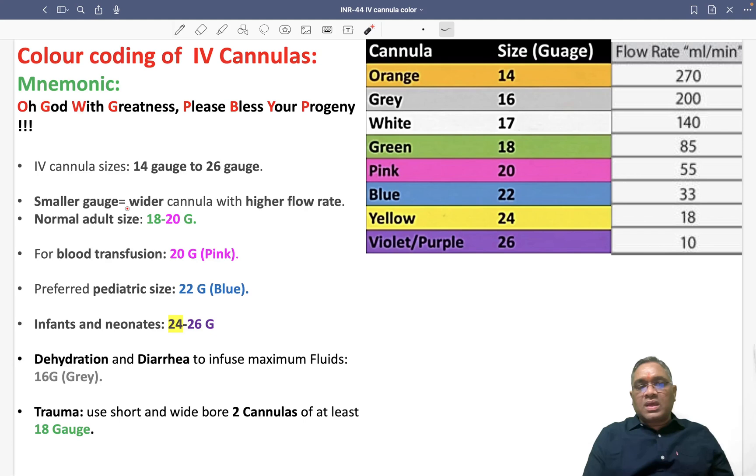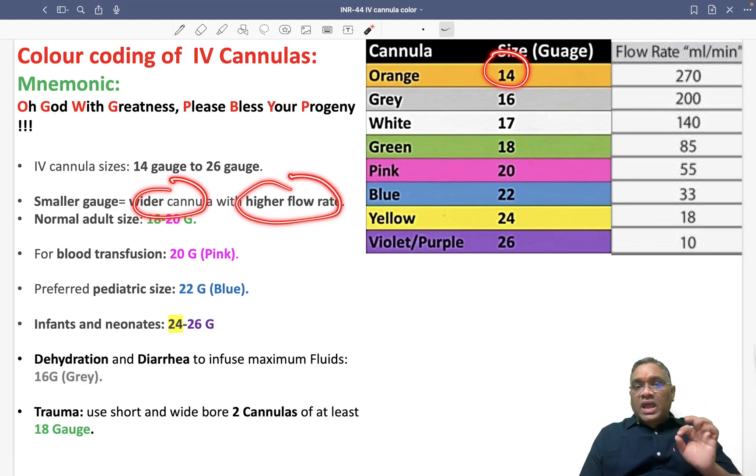Smaller gauge means wider cannula with higher flow rate. Higher gauge means narrower cannula with lower flow rate.